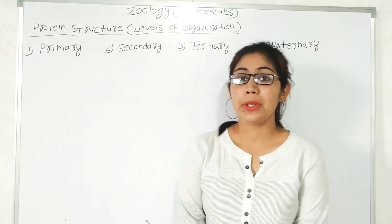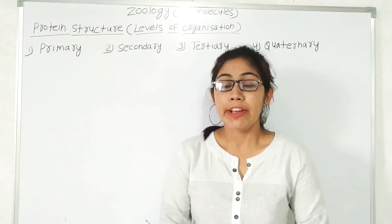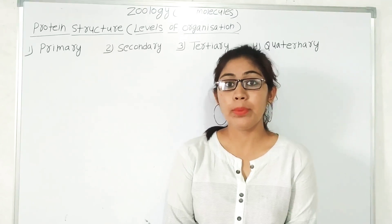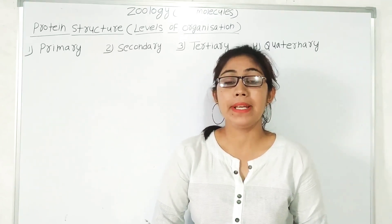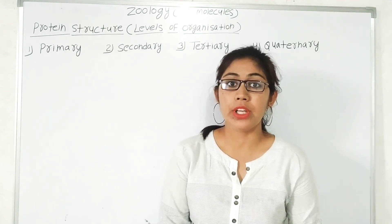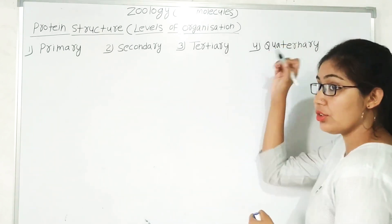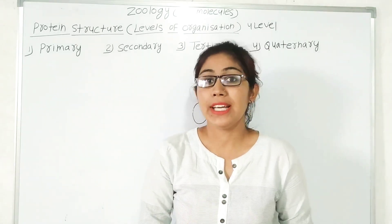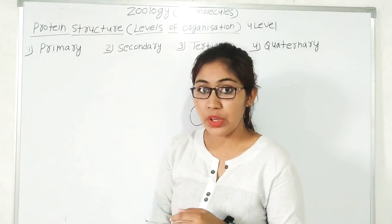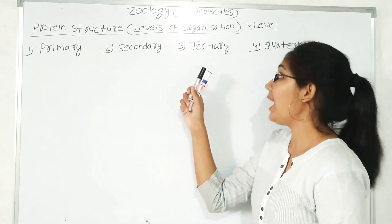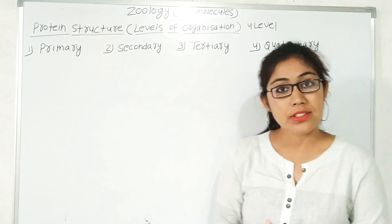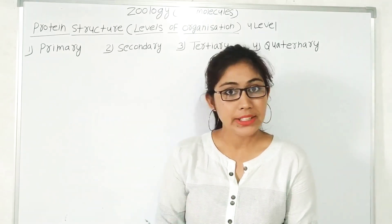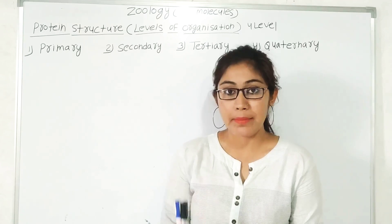Hello everyone. Today we are going to talk about the structure of protein, or the level of organization of protein. We discussed in our last class about the basic structure and the fundamental role of protein in our body. In this lecture, we will cover the four levels of organization of protein: the primary structure, the secondary structure, the tertiary structure, and the quaternary structure.